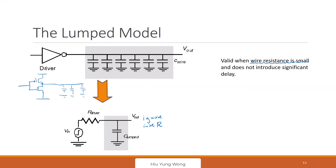We just discussed last time how to calculate the delay. You get RC — but we have 0.69 RC, right? Because of ln(2). Is it because ln(2) is 0.69?